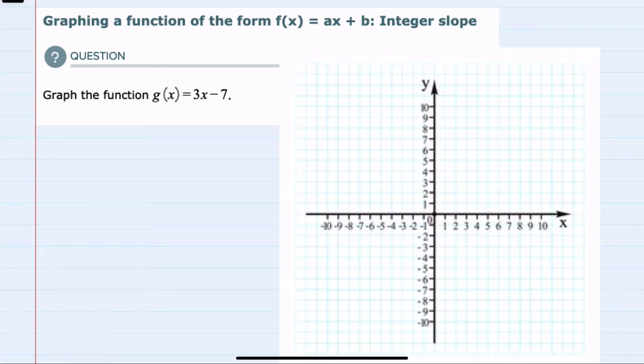In this video I'll be helping you with the ALEKS problem type called graphing a function of the form f(x) = ax + b with integer slope. We're asked to graph the function g(x) = 3x - 7.